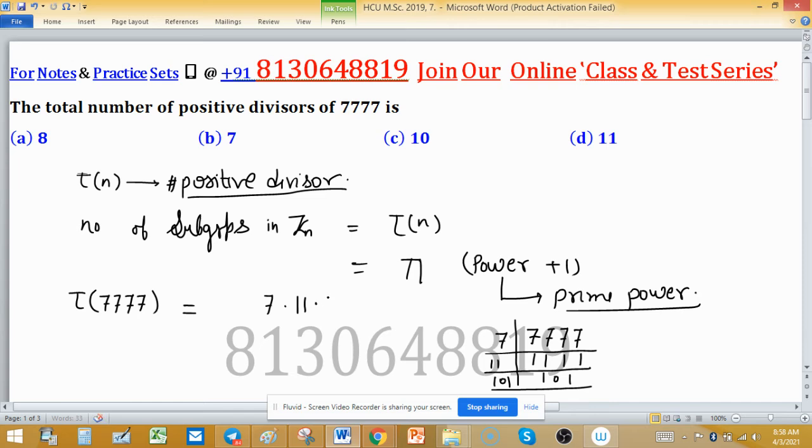Since these are primes, tau distributes. So this becomes tau of 7, tau of 11, and tau of 101. These are all primes.